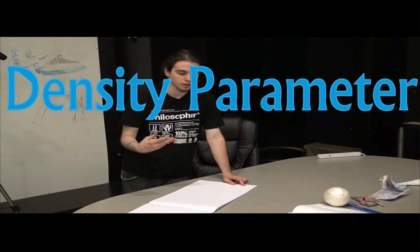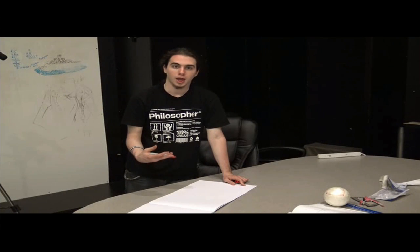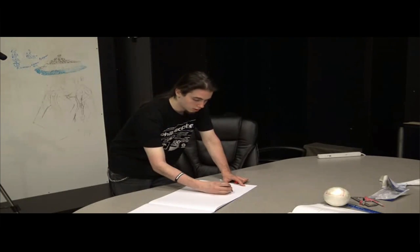When it comes to figuring out the geometry of the universe, we need to talk about something called a density parameter. The density parameter is basically a ratio from the density that you observe and the density needed in order for an expanding universe to stop expanding.